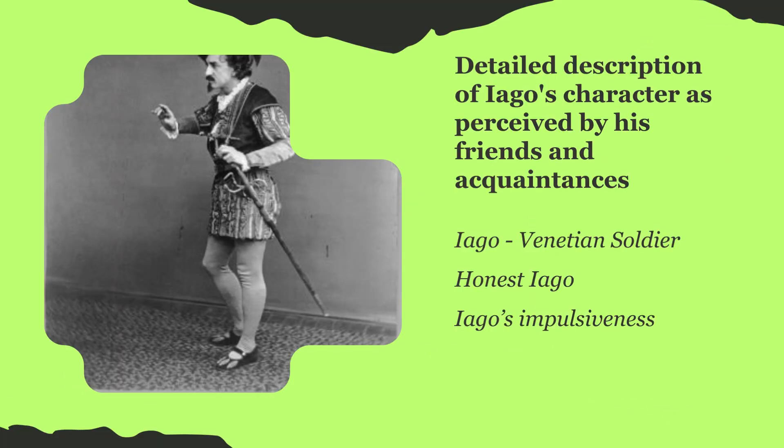Bradley provides a detailed description of Iago's character as perceived by his friends and acquaintances, emphasizing that Iago is not the typical melodramatic villain often portrayed on stage but rather a complex character. Shakespeare describes Iago as a Venetian soldier, around 28 years old, with a reputation for courage and a good deal of military experience. Despite his great powers, Iago is portrayed as vulgar and lacking in refinement, suggesting he is not of gentle birth or breeding. He is depicted as blunt and outspoken, with a tendency to make caustic remarks about human nature. However, his honesty and blunt manner are seen as endearing qualities by those who know him.